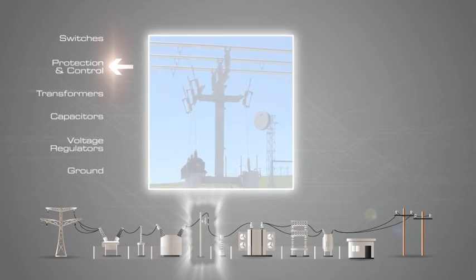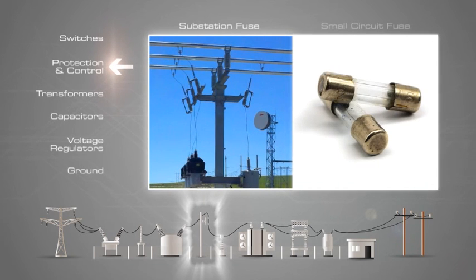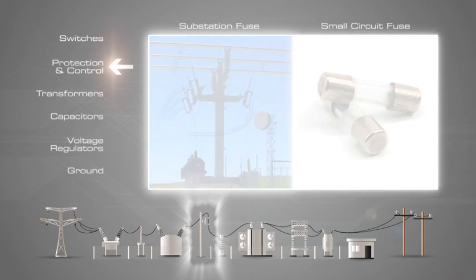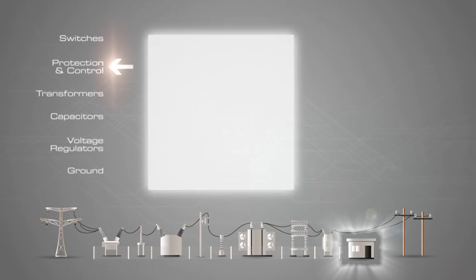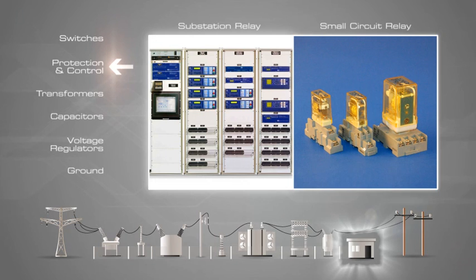An example of protection equipment is a fuse. A fuse is a type of low-resistance resistor that acts as a sacrificial device to provide overcurrent protection of either the load or source circuit. A fuse interrupts excessive current so that further damage by overheating or fire is prevented. A digital protective relay uses a microprocessor to analyze power system voltages and currents for the purpose of detection of faults in an electric power system.